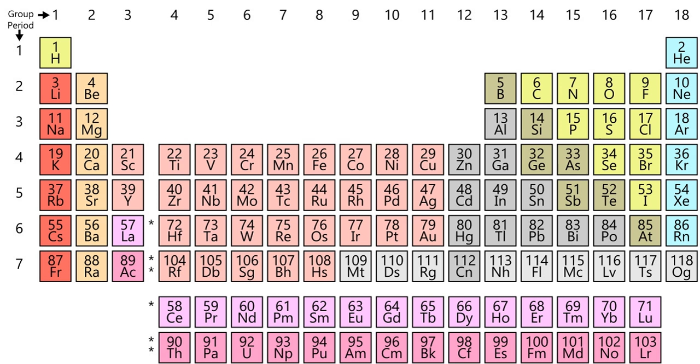Almost all other elements found in nature were made by various natural methods of nucleosynthesis. On Earth, small amounts of new atoms are naturally produced in nucleogenic reactions, or in cosmogenic processes, such as cosmic ray spallation.